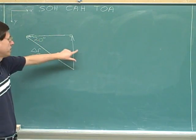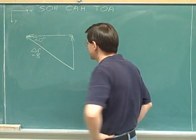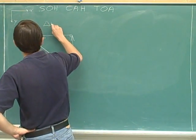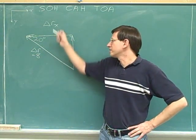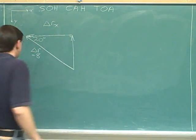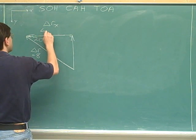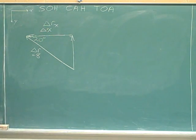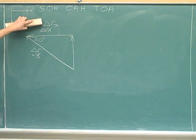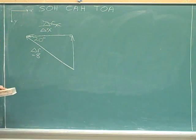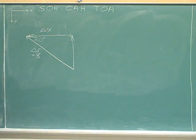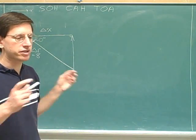We need the X component and the Y component of the displacement. You might have thought the X component would be written as delta R sub X, but it turns out there's a different convention for displacement. That is not the symbol we're going to use. Instead, we use a simpler symbol — just delta X. Even though delta R sub X seems logical, it is not the correct symbol for the X component of displacement. The convention is just delta X.